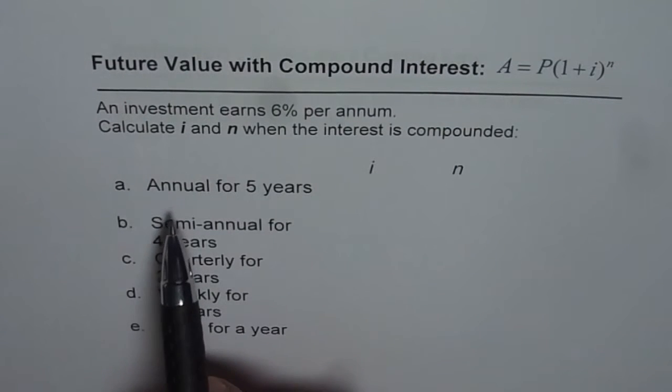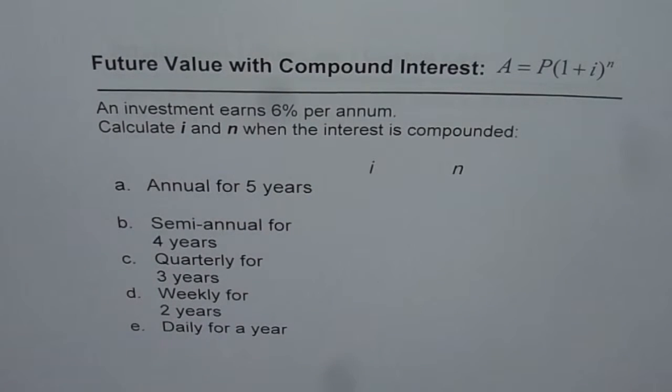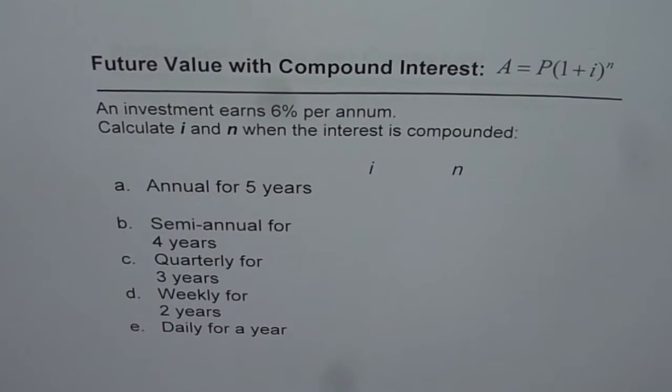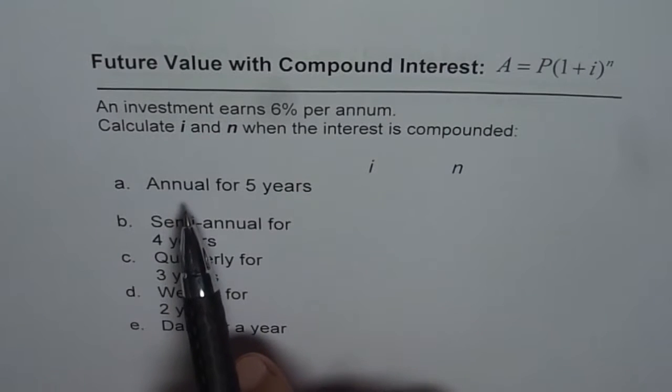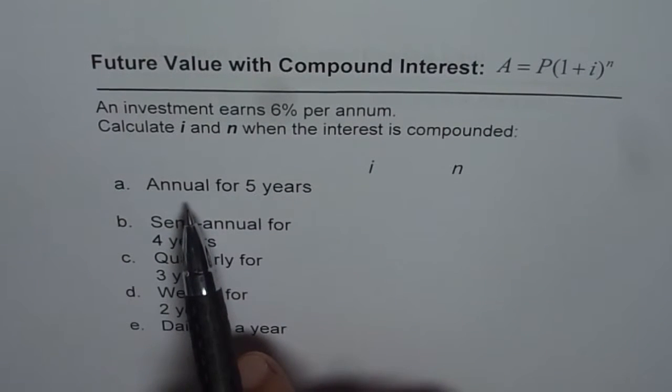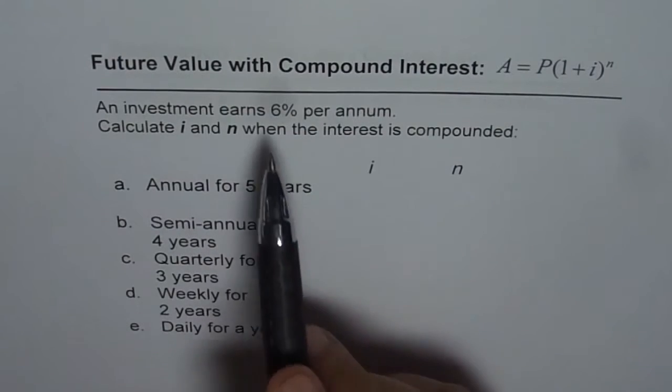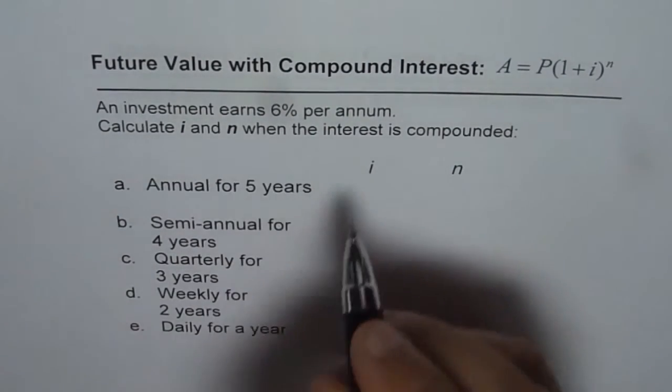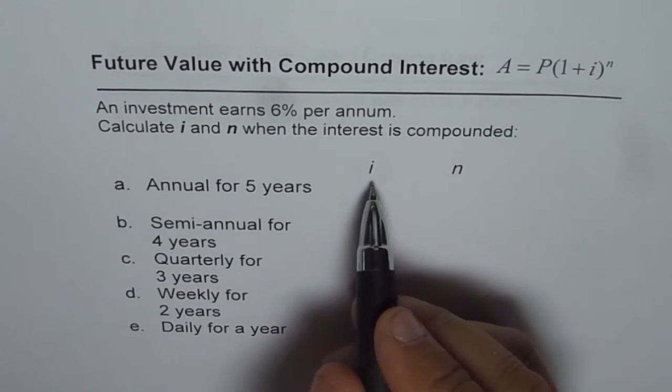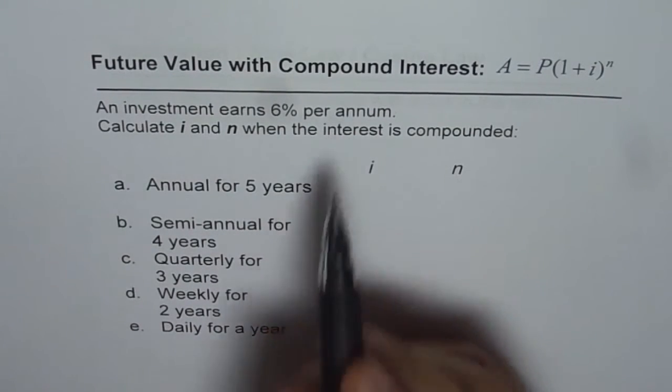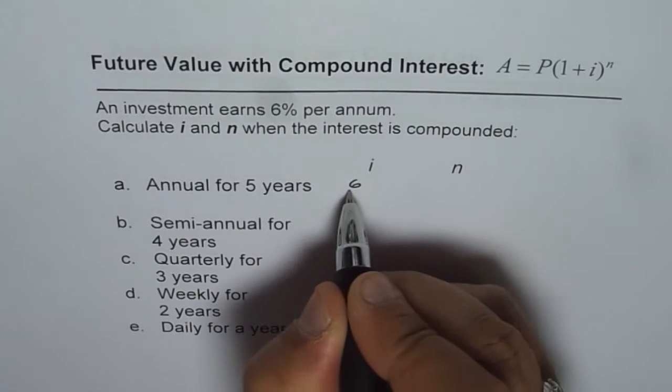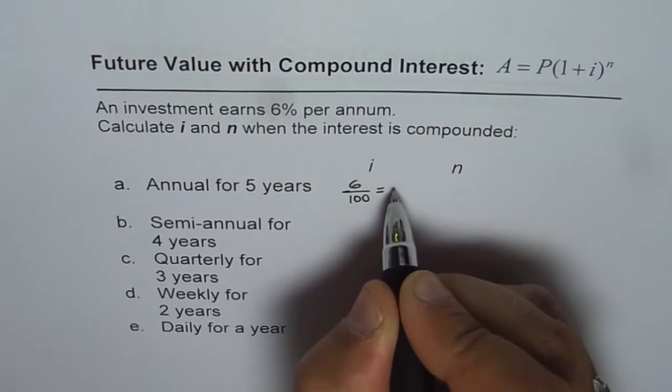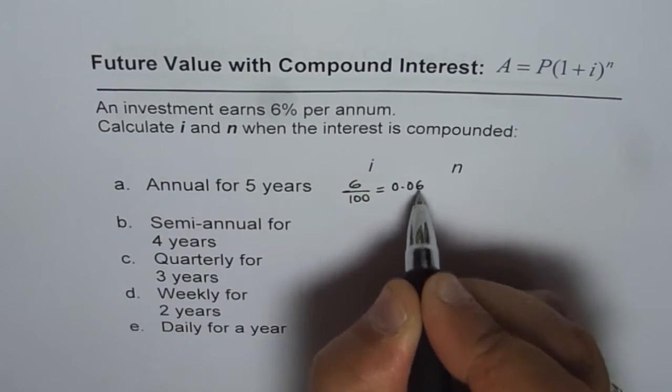First one is annual for 5 years. Now when we say annual that means compounding period is 1 per year. Since compounding period is 1 per year and we have 6% per annum as the interest rate, so that 6% will be applied per year. But we have to always use the decimal value. That means 6 over 100, which equals 0.06.